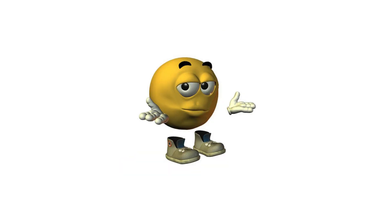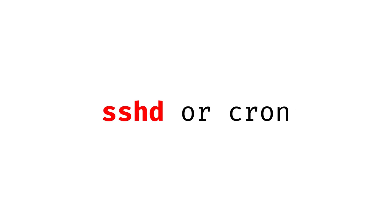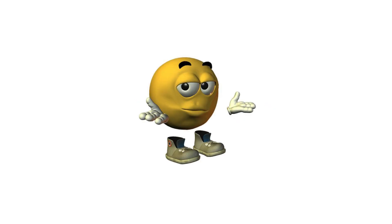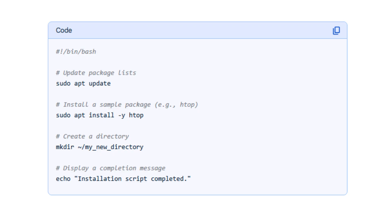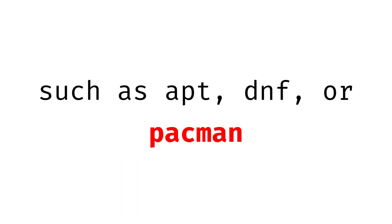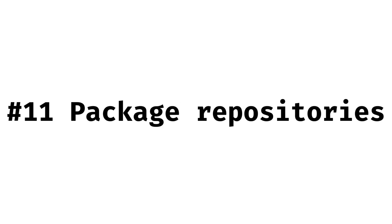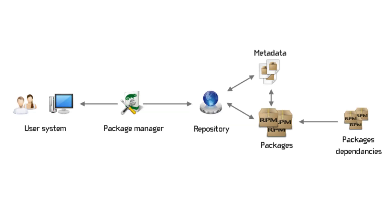Some of these services are daemons, background processes like sshd or cron that don't need direct user interaction. To install or update programs, Linux uses a package manager, such as apt, dnf, or pacman, which fetch software from package repositories maintained by the distribution.